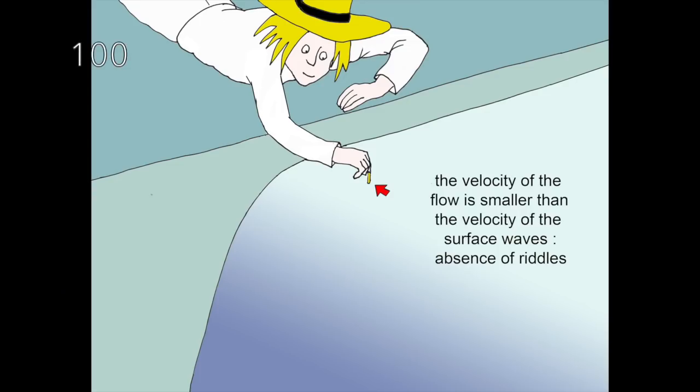On this picture, you see that Archibald Higgins puts his toothpicks upstream. There, the velocity of the fluid is smaller than the velocity of the surface waves, so that no riddle appears. This is the analogy of subsonic flight in the air. It corresponds to the following pattern for the wave propagation.